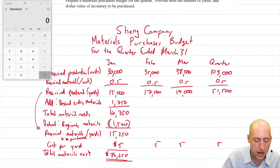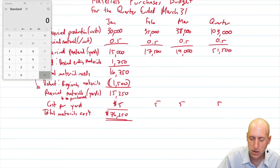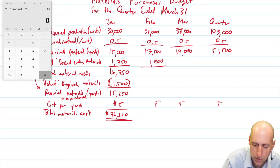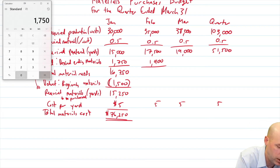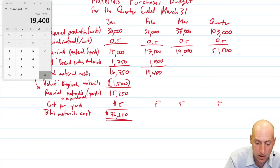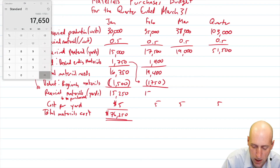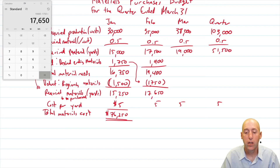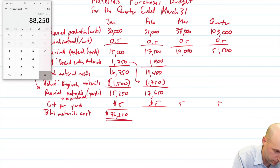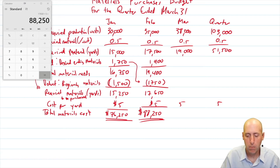Let's do February. The desired ending materials for February is 10% of the following month — so 10% of March's 19,000 yards = 1,900 yards. Total material needs for February: 17,500 + 1,900 = 19,400 yards. Beginning materials for February equals ending materials from January, which was 1,750 yards. So 19,400 − 1,750 = 17,650 yards to be purchased. At $5 per yard, the total materials cost for February is $88,250.